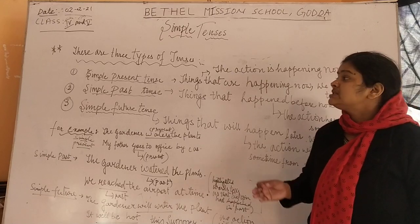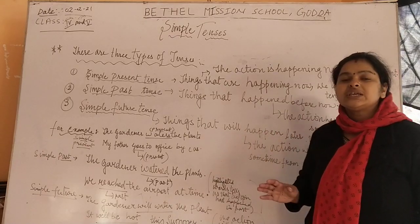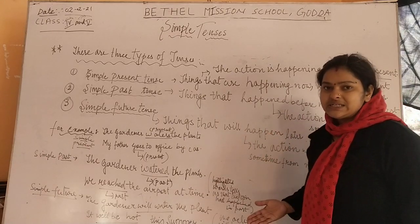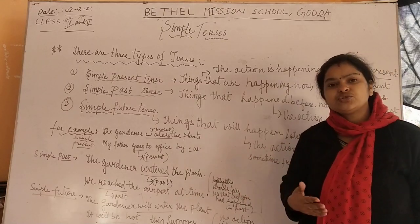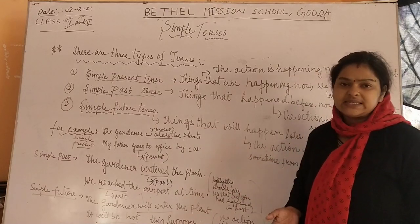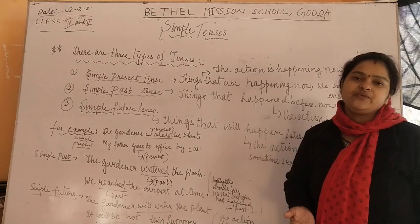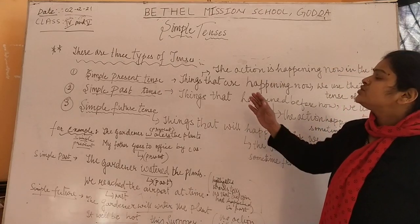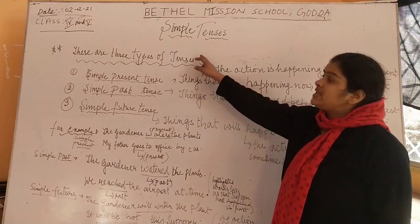The action which is taking place in the present is known as present tense, the action which has taken place in the past is known as past tense, and the action which will take place in the future is known as future tense. So there are 3 types of tenses.